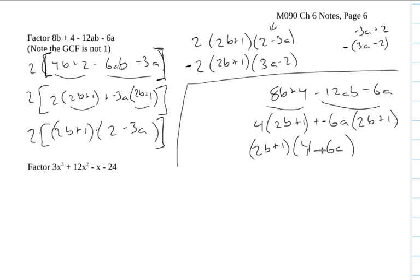Now this 4 minus 6a, I'm going to go ahead and switch it around. The same trick I did is over there. I'm going to make this a negative 2b plus 1 times 6a minus 4. But there is a common factor between the 6 and the 4, and when we're factoring stuff, we want to break it down into as small pieces as possible.